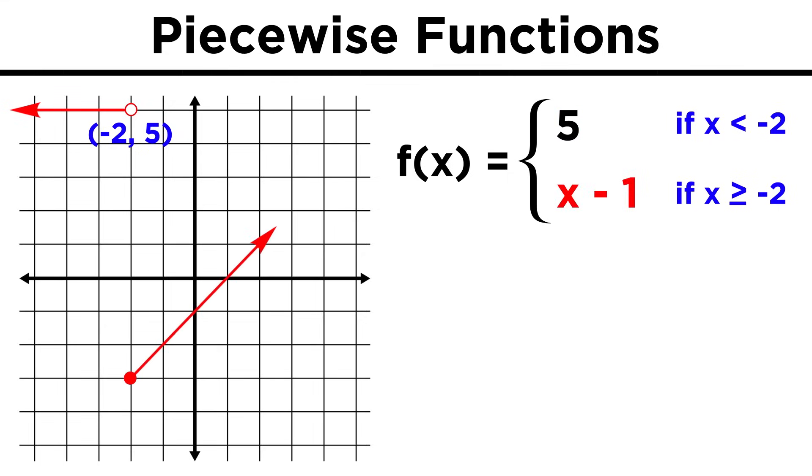Then, from negative two until positive infinity, the function will look like the graph of x minus one. So we can draw that starting at negative two, negative three, filling that in with a closed circle since that point is included in the function. This extends to positive infinity, so here's what we end up with.